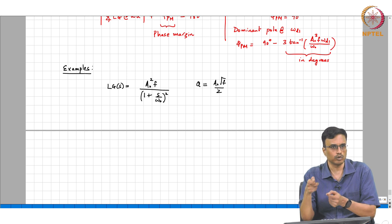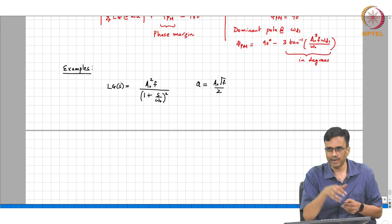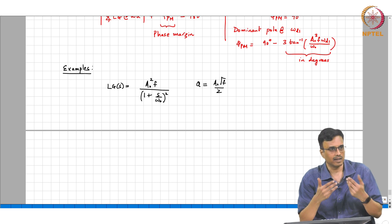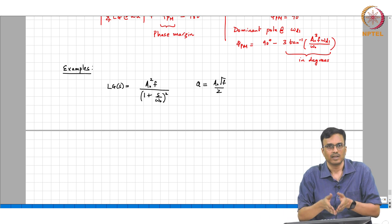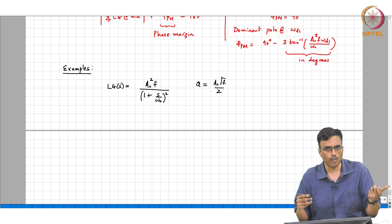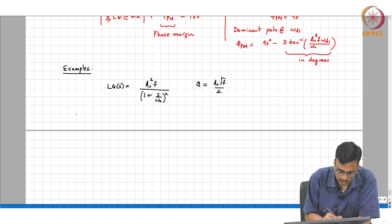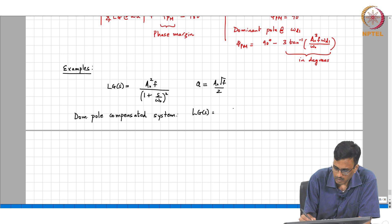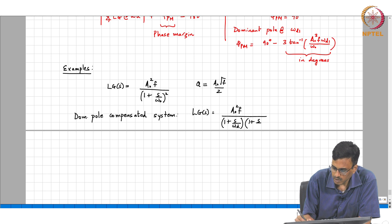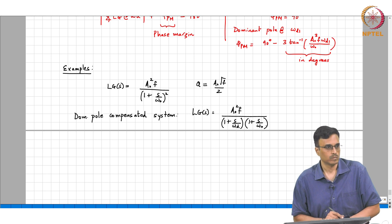If you want to make one of those poles lower in frequency, you identify a node, take a big fat capacitor and put it on that node. In other words, rather than add a new pole and make the system third order, you can make one of the poles dominant with respect to the other. So the dominant pole compensated system is (1 + s/omega_d) / (1 + s/omega_naught).